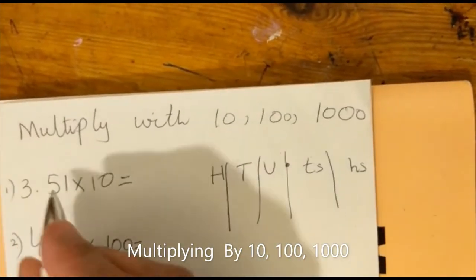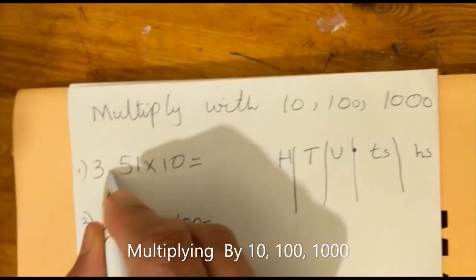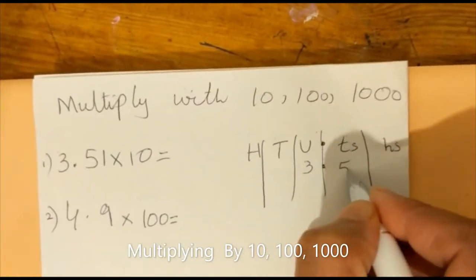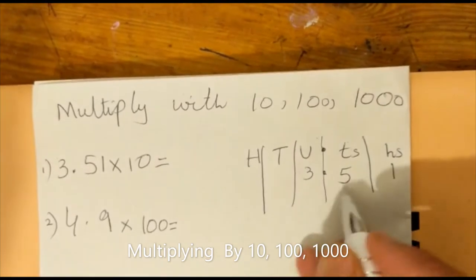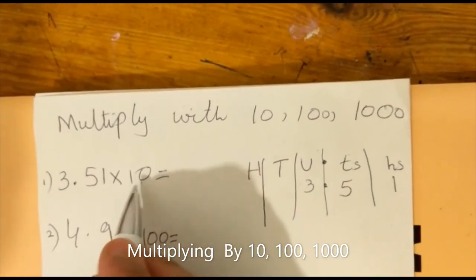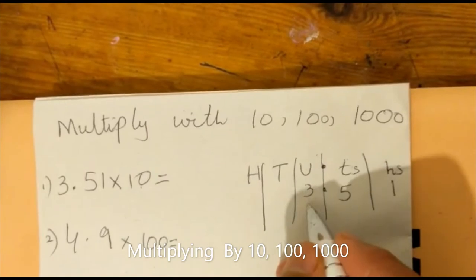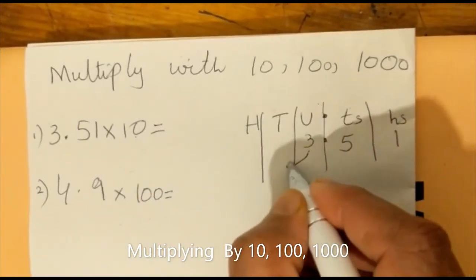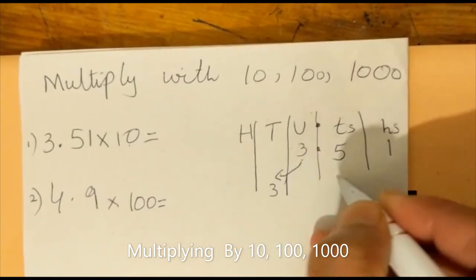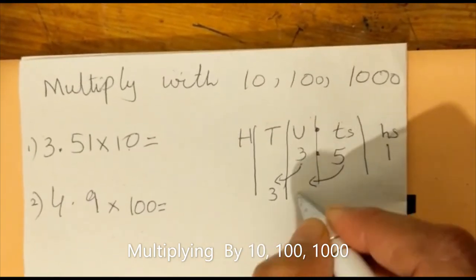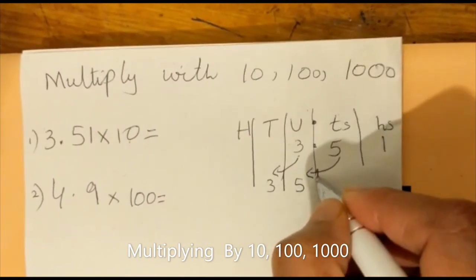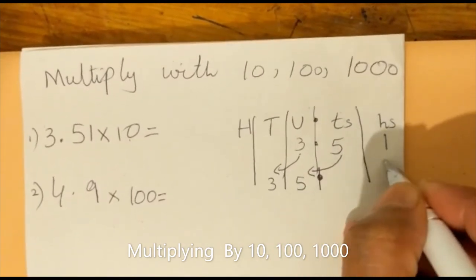Now we have the question 3.51. You always have to see the decimal. We'll put 3.51 here. Now with one zero, we will move one position. We'll put 3 here, write 5 here, the decimal here, and 1 here. The answer is 35.1.